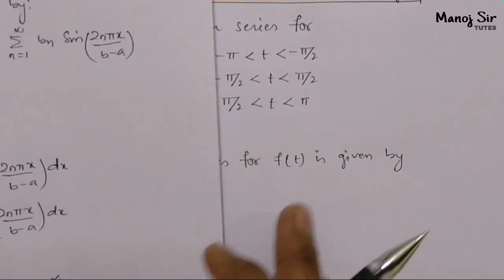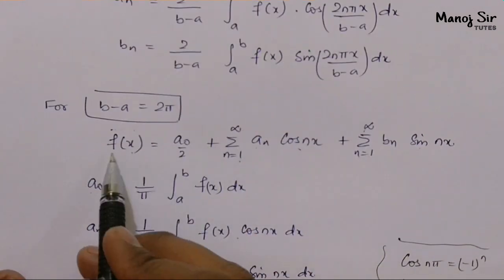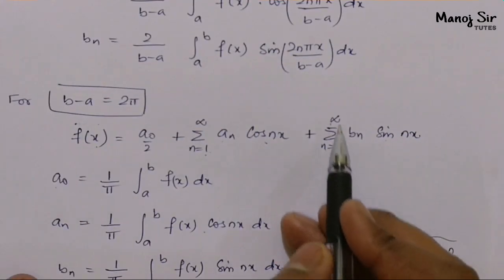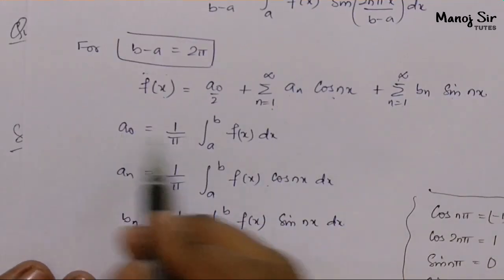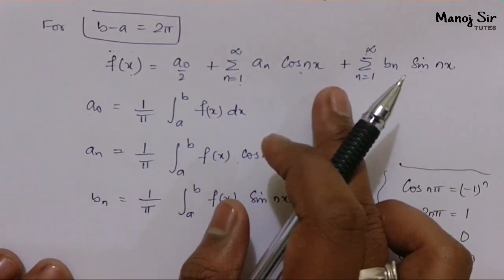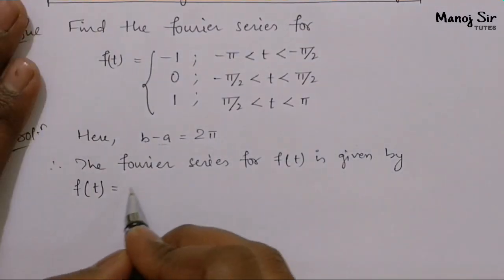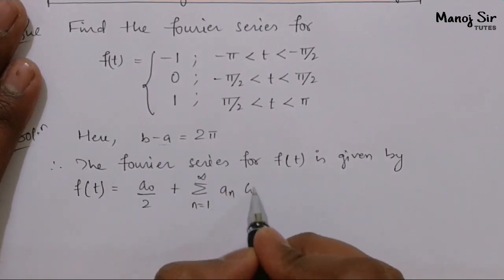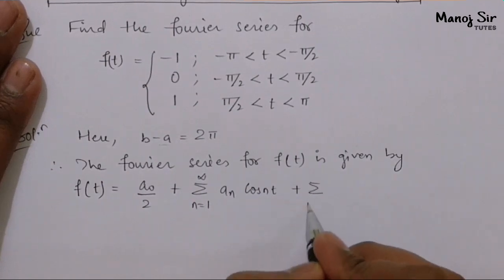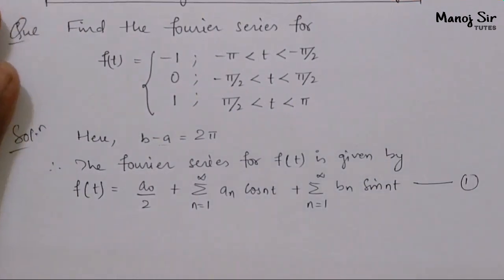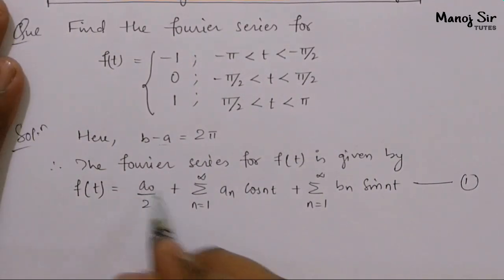Since b - a = 2π in the given problem, we use the simplified Fourier series: f(x) = a₀/2 + Σaₙcos(nx) + Σbₙsin(nx). So for our problem, f(t) = a₀/2 + Σaₙcos(nt) + Σbₙsin(nt). This is equation 1. Now we will find a₀, aₙ, and bₙ one by one.